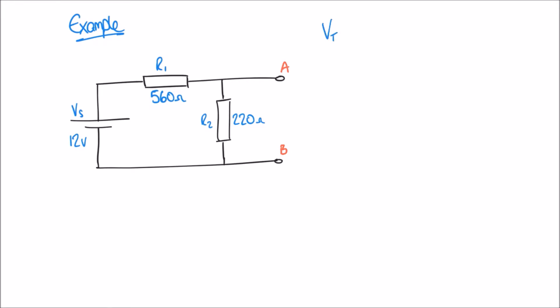The Thevenin voltage is going to be whatever voltage we measure across these output terminals. Using the voltage divider rule, that's the supply voltage of 12 volts multiplied by a fraction — on the top of that fraction we put whichever resistor we're measuring across, so in this instance the 220 ohm resistor. On the bottom we put both resistors added together: 560 plus 220. Calculating that gives an answer of 3.38 volts. So our Thevenin voltage — the voltage we'd measure from terminal A to terminal B — is 3.38 volts. That's step one.